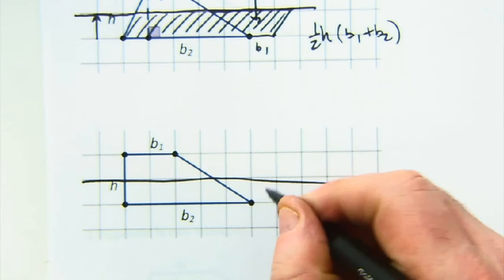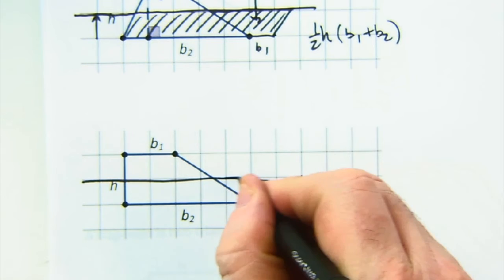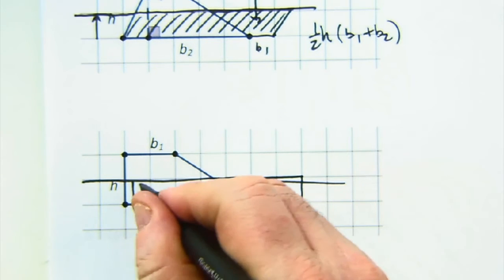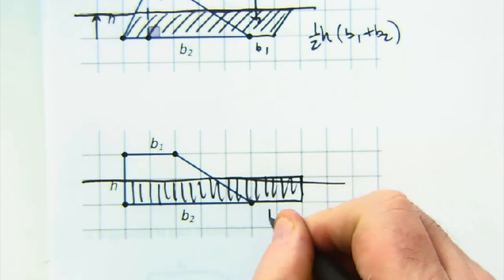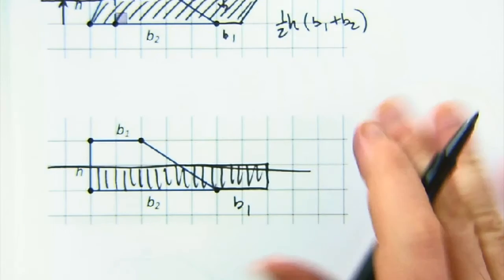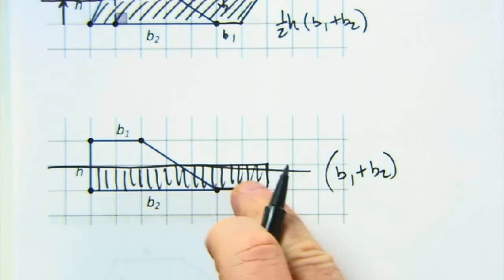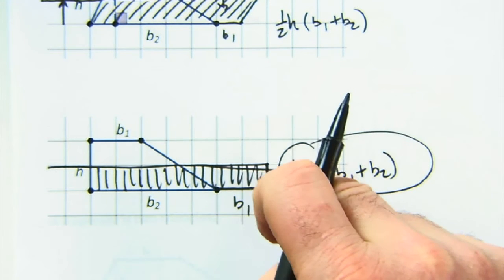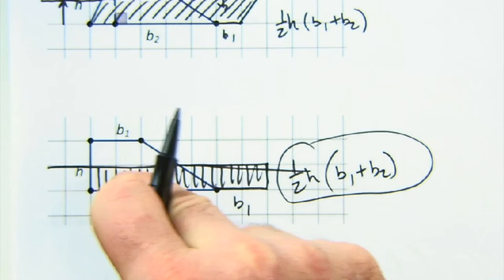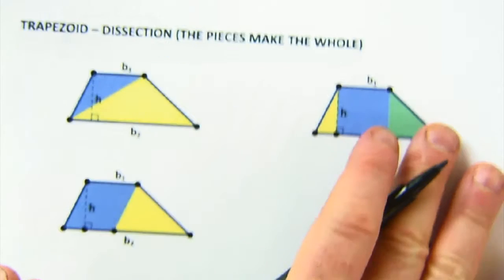Here's another variety of dissection. Cut this in half and fit it right here — there's b1 and b2. This time I made a rectangle. The base of the rectangle is (b1 + b2), and the height dimension is exactly one half of h. So the area is (b1 + b2) times one half h, which gives exactly the same result.